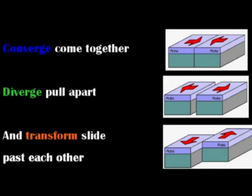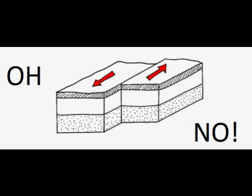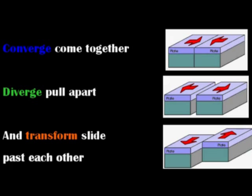Boundary three — this is transform. This boundary likes to perform. This one is all about timing. If you watch them plates, they be sliding and grinding. But you gotta watch — if they jerk and break, all heck will break loose. Here comes the earthquake! That's all three boundaries. You gotta take it to the hook.